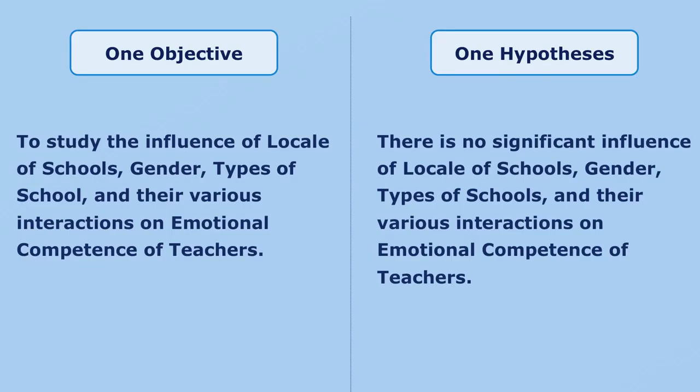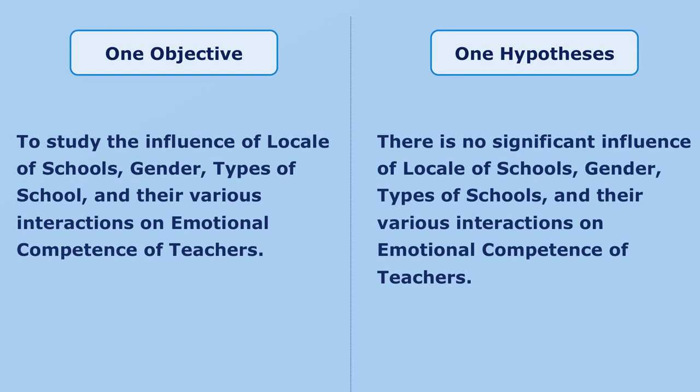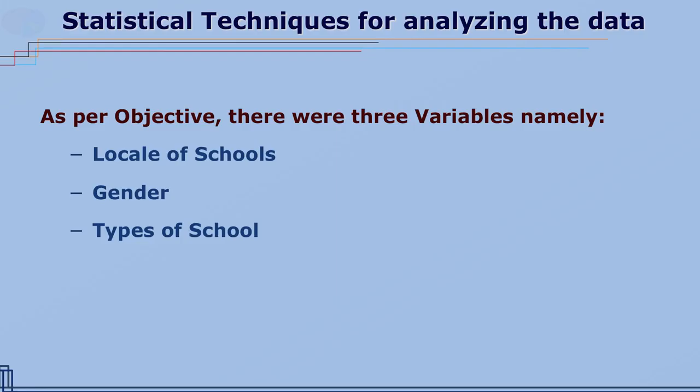G) There is no significant influence of interaction among locale of schools, gender and types of school on emotional competence of teachers. As a researcher you must decide whether to write one objective with one hypothesis, or seven objectives each with a corresponding hypothesis.